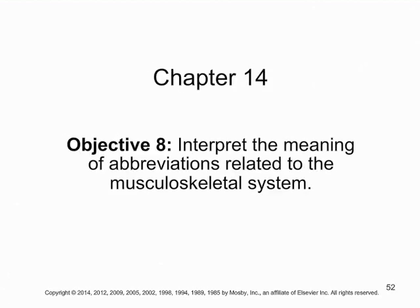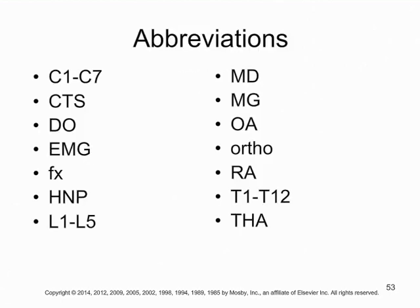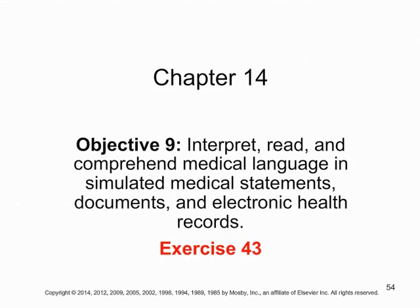Rounding out the chapter, we have a list of abbreviations — all of which were introduced in parentheses throughout the chapter, now compiled in one list. Once you feel comfortable with all these terms and have worked through the chapter exercises, try exercises 43 through 45 to test yourself when all the words are mixed together. The last two slides give an example of exercise 45, where you read aloud and see medical terms used in context.